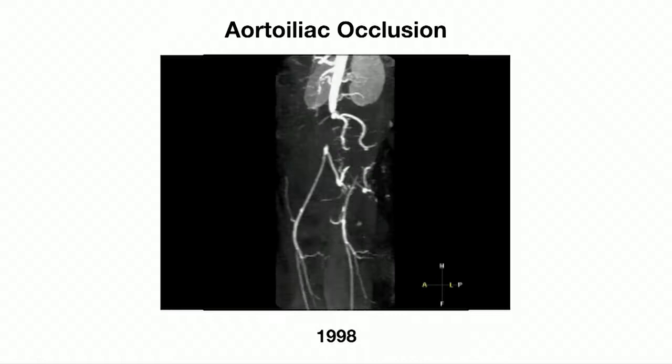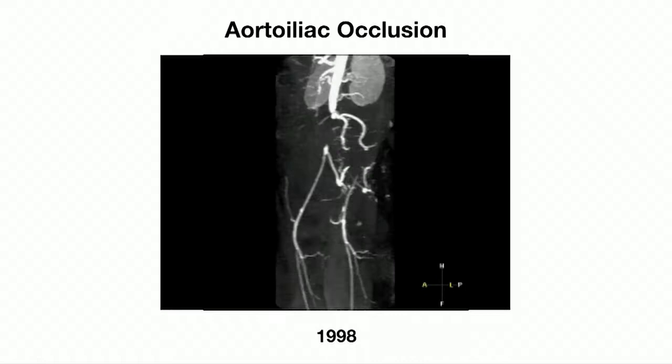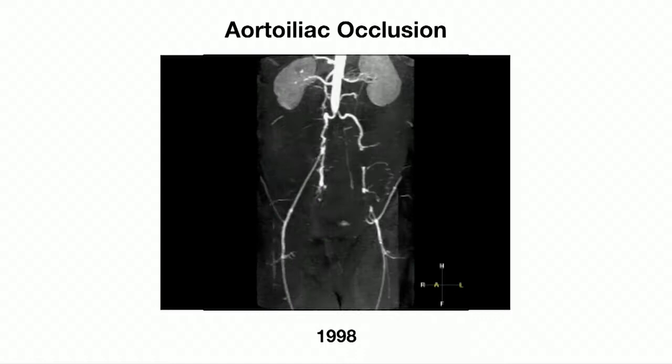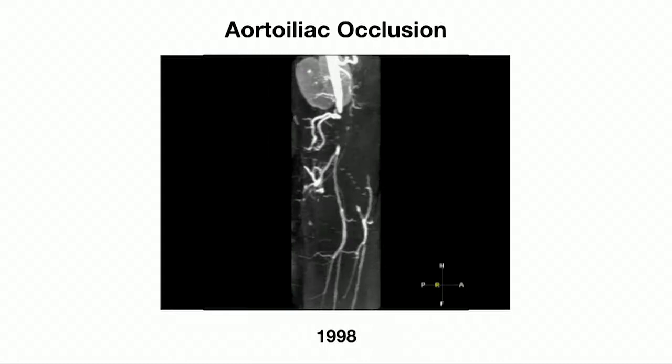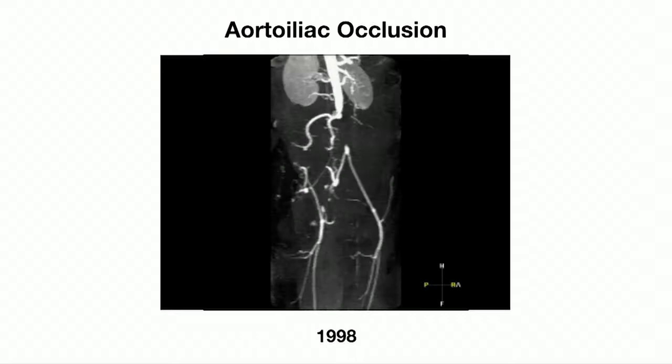Here's a nice renal MRA — the first one we ever did in Glasgow in 1998. This was a revolution for us because up to that point we'd have had to do a translumbar aortogram, putting a needle through the back of the patient into the aorta to get this kind of picture. We didn't have radial puncture sets at that time, so this was a revolution — completely non-invasively getting a 3D examination.